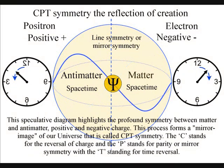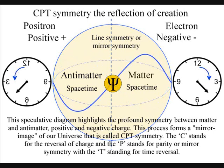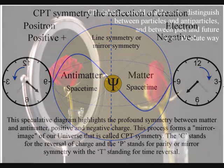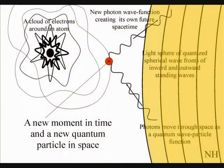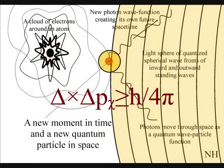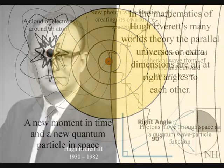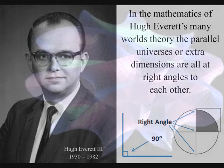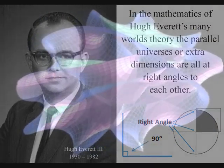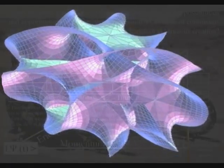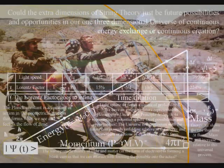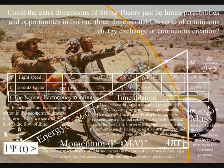Because the future is always based 100% on the past, therefore we have mirror symmetry between the future and the past at each dipole moment or photon-electron coupling. Everett's many worlds interpretation was a forerunner to string theory with its extra dimensions. In these videos, the extra dimensions are explained as future possibilities and opportunities in our one three-dimensional universe.